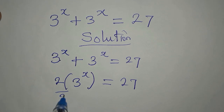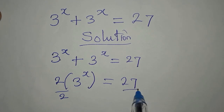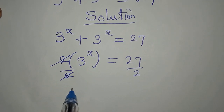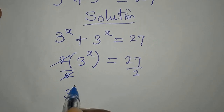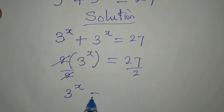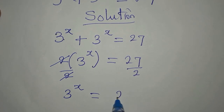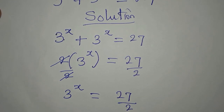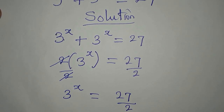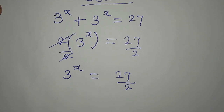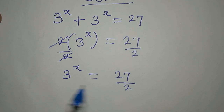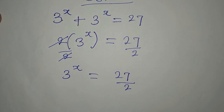What if I divide both sides by 2? The 2 goes away, and 3 to the power of x is equal to 27 divided by 2. Now, what do I do? I'm going to take the log of both sides.